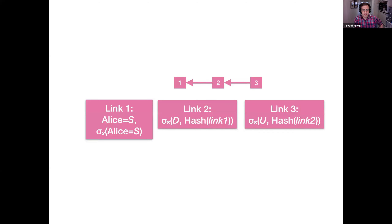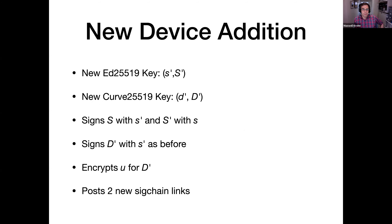In effect, Alice has made three different signatures: one saying 'this is my first key S', a second saying 'this is my device key D', and a third saying 'this is my per-user key U'. They're all stored in a giant Merkle tree under the path given by the username N. Link one is Alice's signing key, link two is the encryption/decryption key, and link three is the per-user key.